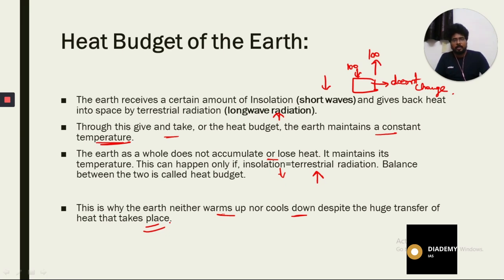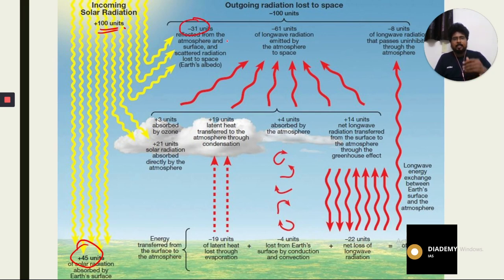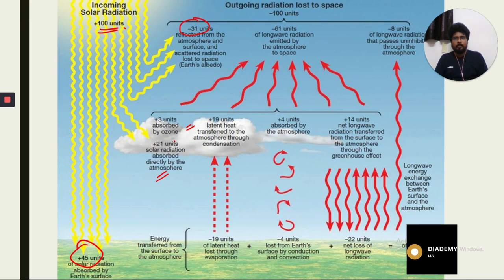Let's understand the heat budget in detail. 100 units of solar radiation come in. Out of these, 45 units are absorbed by the Earth, 31 units are reflected from the atmosphere and surface as scattered radiation lost to space, 3 units are absorbed by the ozone layer, and 21 units are absorbed directly by the atmosphere. The total is 100 units.